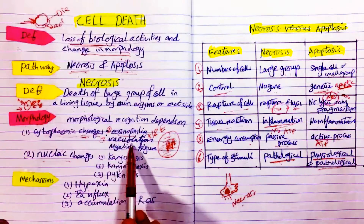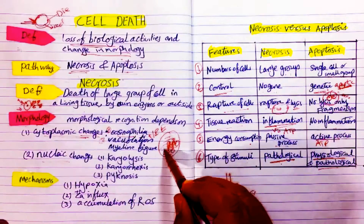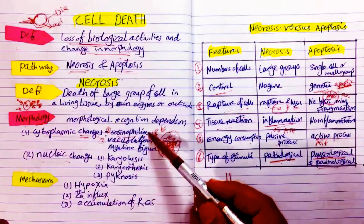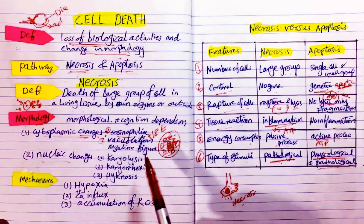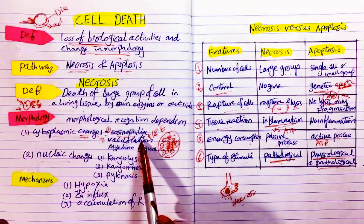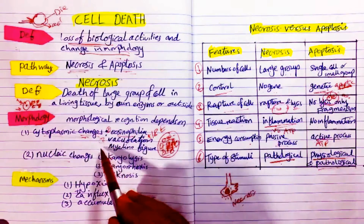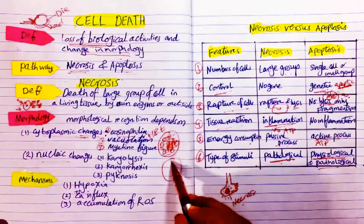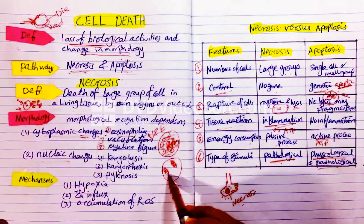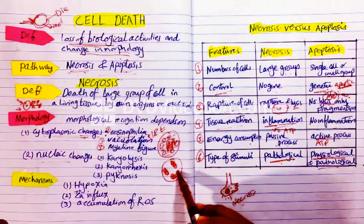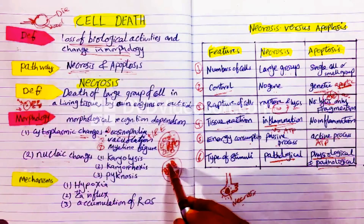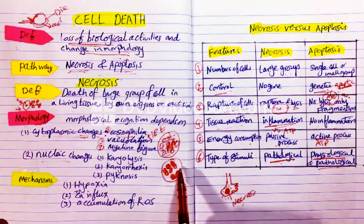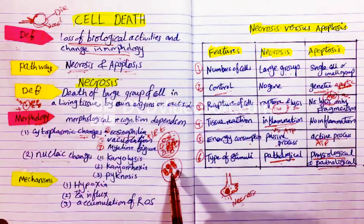The second cytoplasmic change is vacuolation — there is a lot of vacuolation in the cytoplasm. These changes are also found in all irreversible cell injury changes. Third, sometimes you will find myelin figures — whorled bodies due to denatured protein, where the intracellular protein becomes denatured and forms whorls, giving what is called a myelin figure, and sometimes all the cells will be filled with these myelin figures.